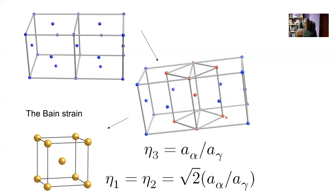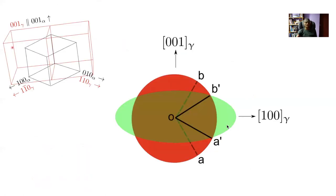This involves a compression along the vertical axis and expansion along both the other axes, and it leaves no line whatsoever undistorted — everything in the basal plane is expanded and everything in the vertical plane is compressed, so there is no invariant line at all. This means we can't satisfy the condition for martensite. So 001 directions are there, and 100 of alpha parallel to 1-bar10, and so on.